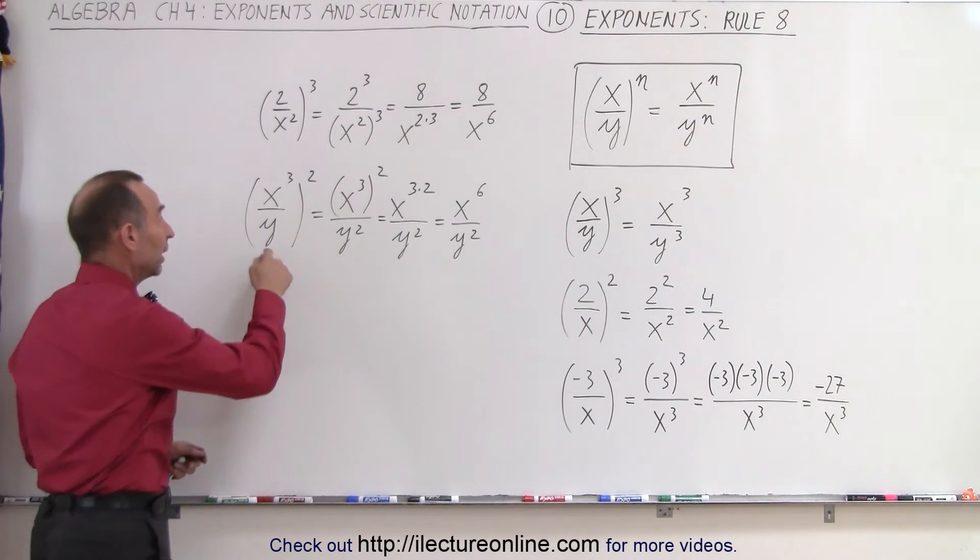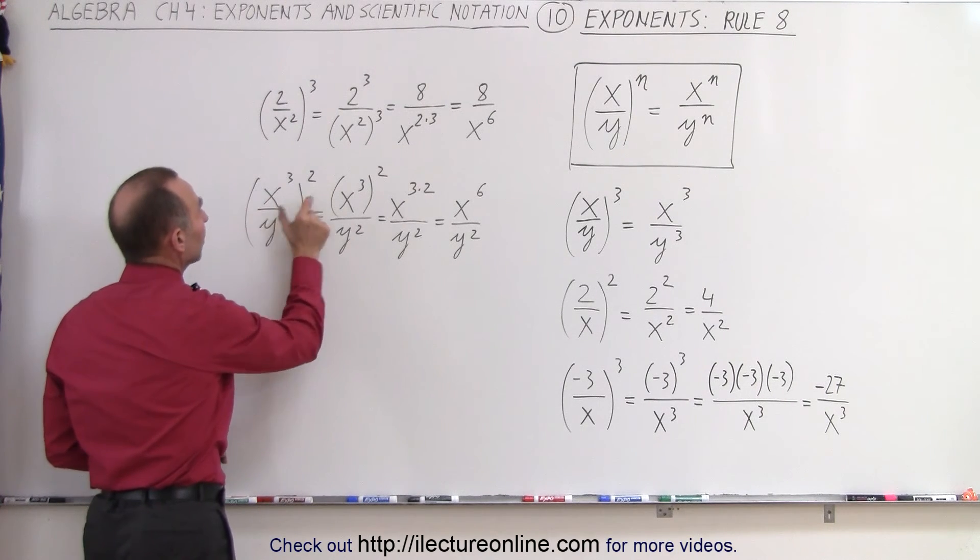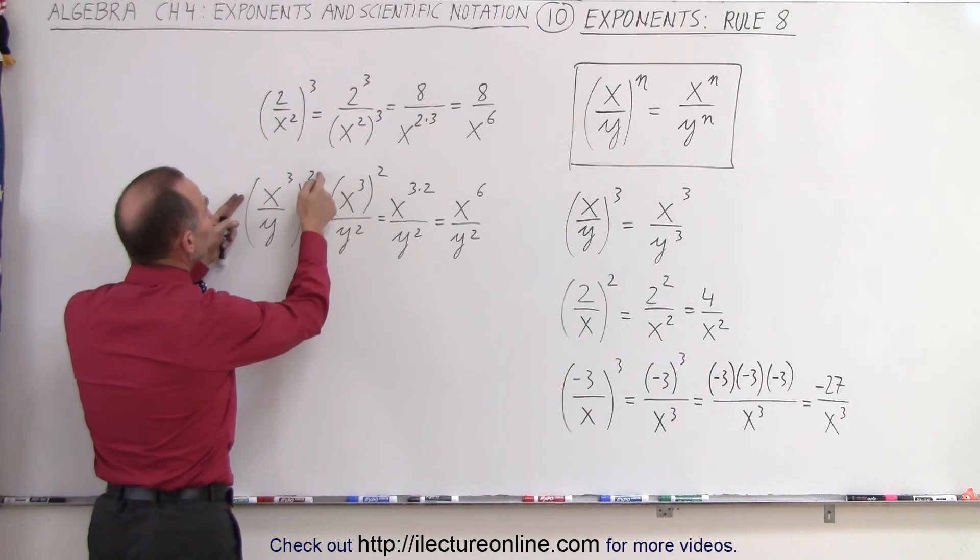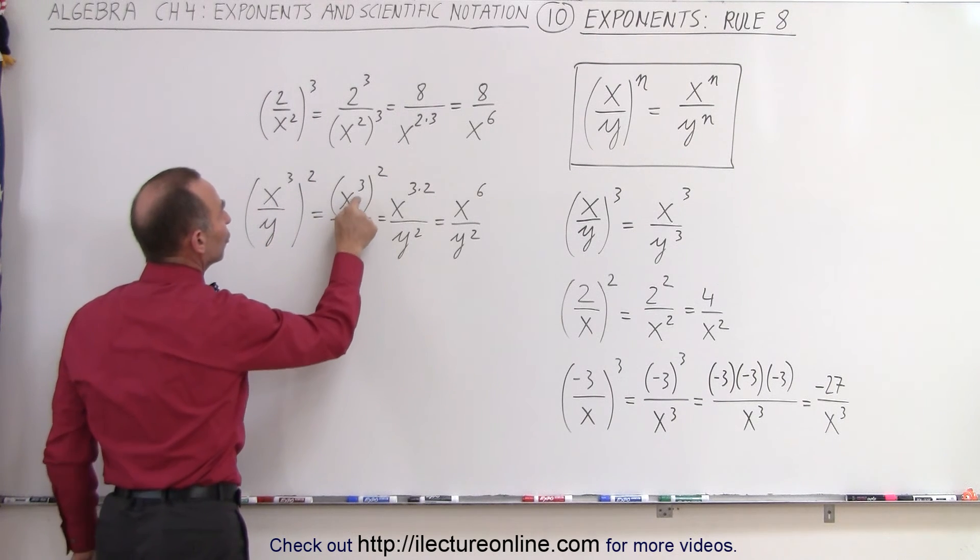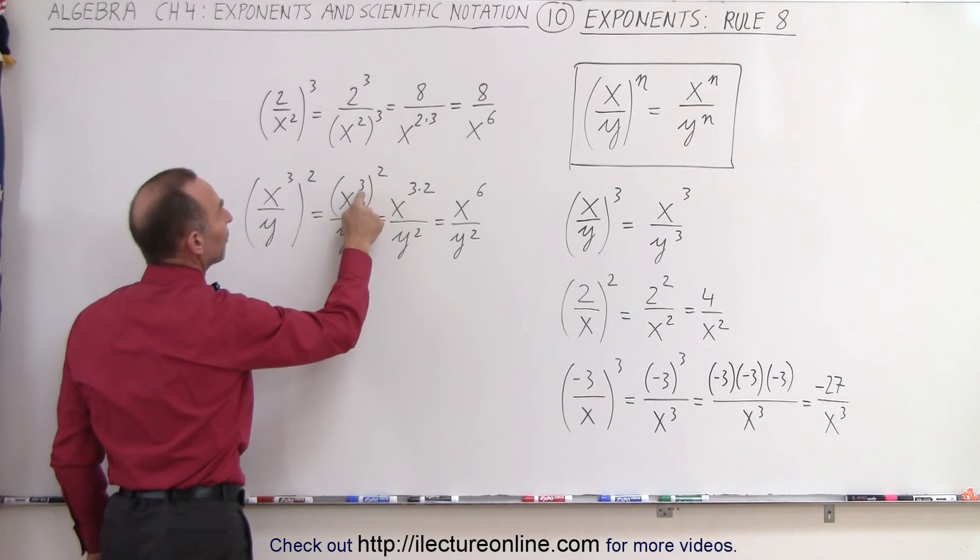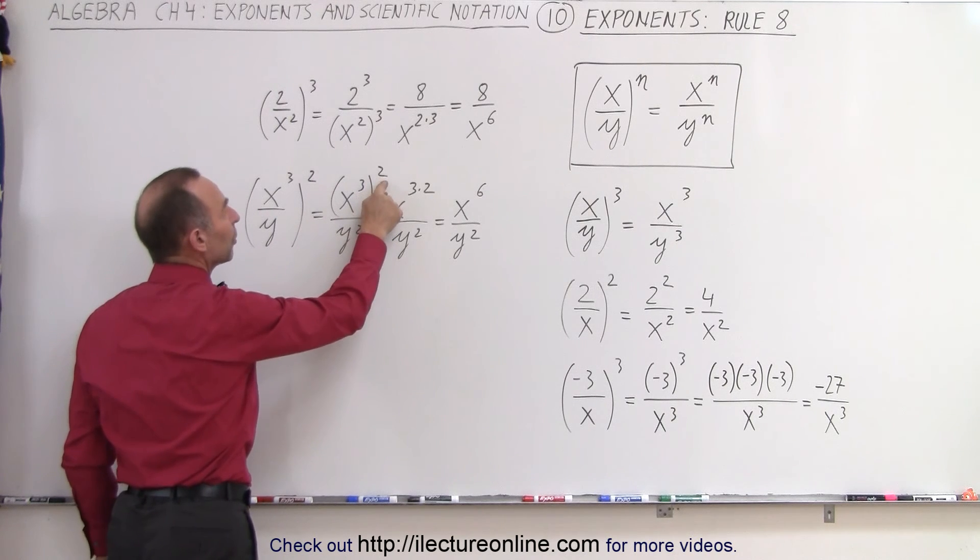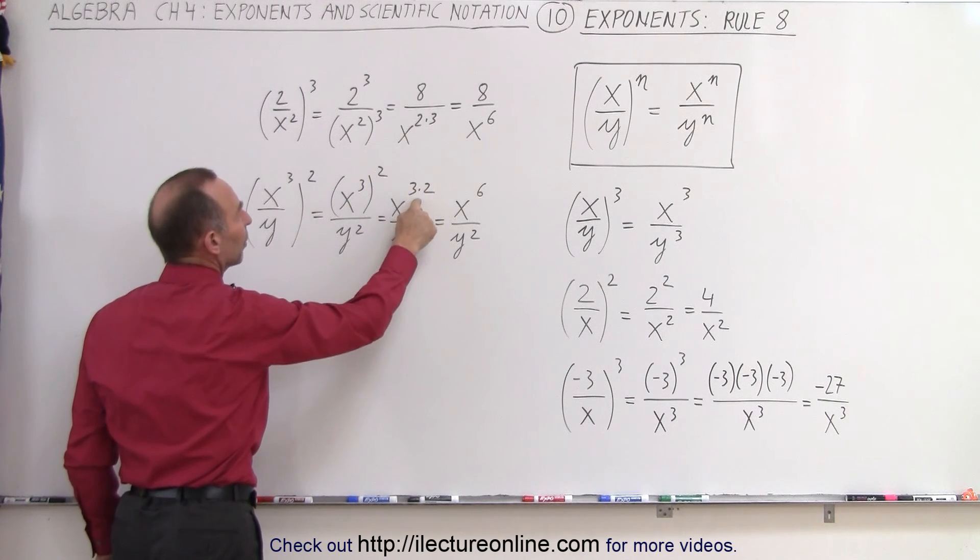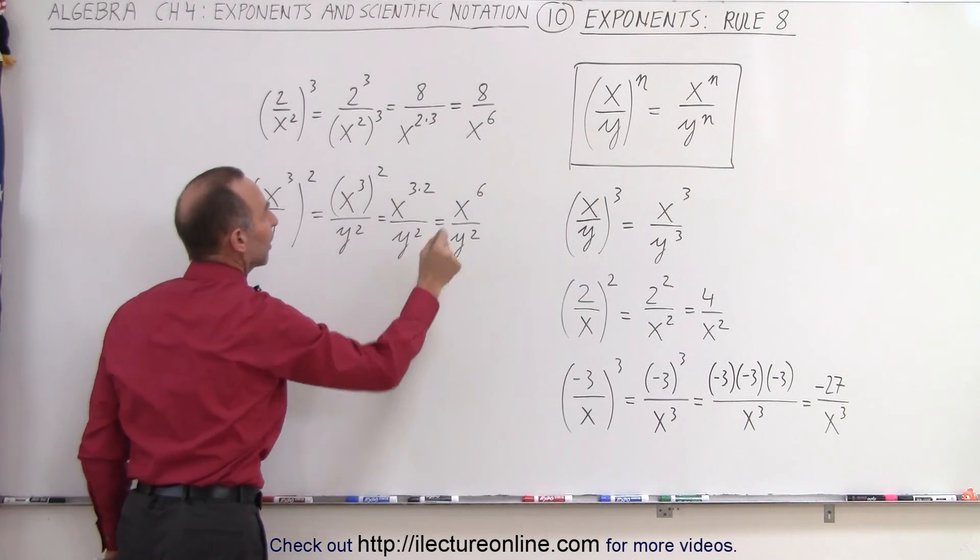If the exponent is in the numerator, it doesn't make any difference. It's again the numerator quantity squared, the denominator squared, so we have x cubed squared, which means we have an exponent raised to an exponent, which means we're going to multiply the exponents, so we get x to the sixth divided by y squared.